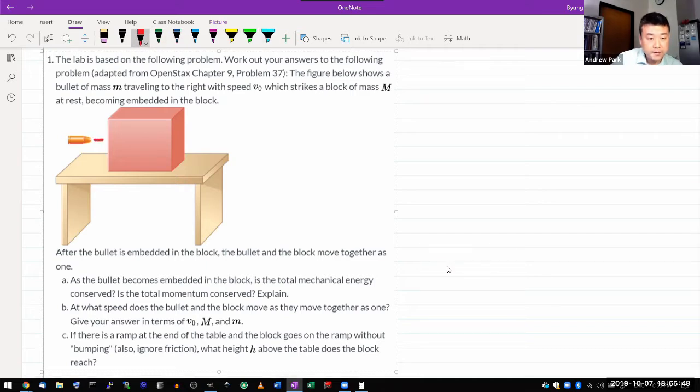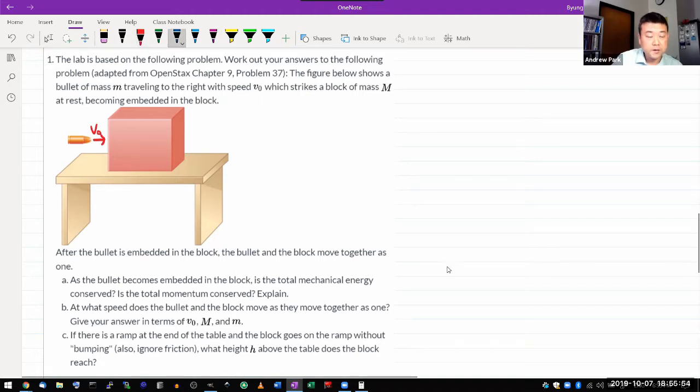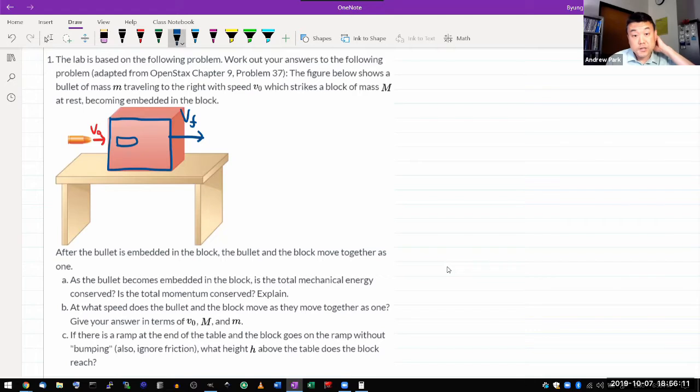You have some bullet that's coming in with speed v-naught. What it's describing here is that once the bullet is embedded, both the bullet and the block now move together with some speed v-final. This is an interaction that does not conserve energy.